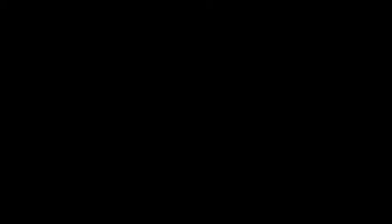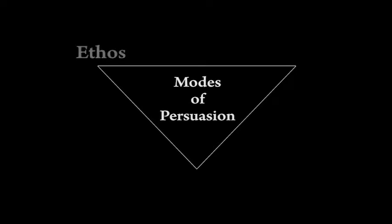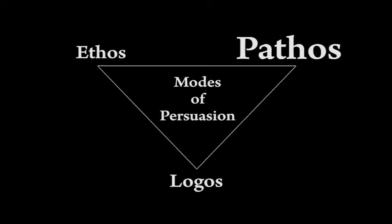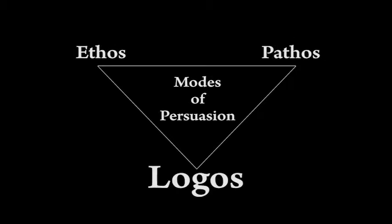Because a speech is persuasive in nature, it's helpful to review Aristotle's three modes of persuasion—ethos, pathos, and logos. Ethos, or ethical appeal, establishes credibility through convincing the audience on the character of the author. This is done through delivery and use of evidence in the speech. Pathos appeals to the emotions of the audience. Logos is persuasion through the use of reason or logic.